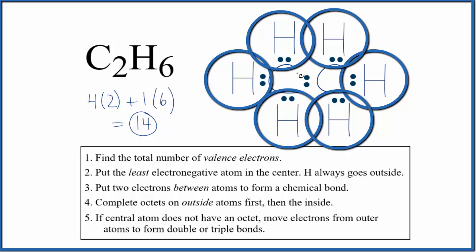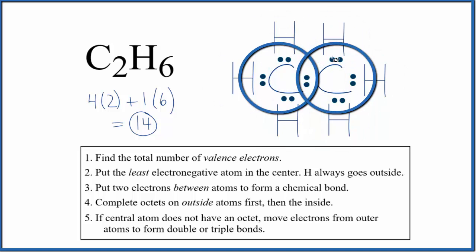Each carbon has eight, and if you count all the electrons, 2, 4, 6, 8, 10, 12, 14, we've used 14 valence electrons.